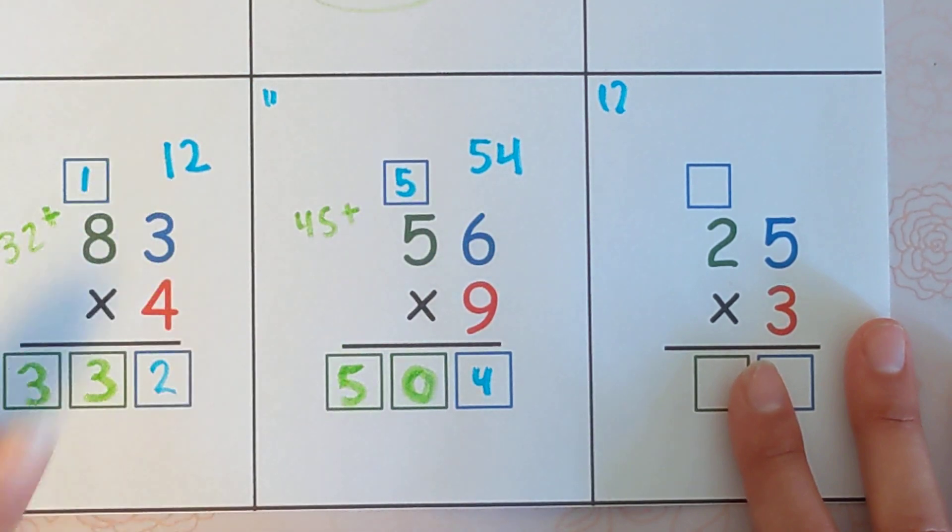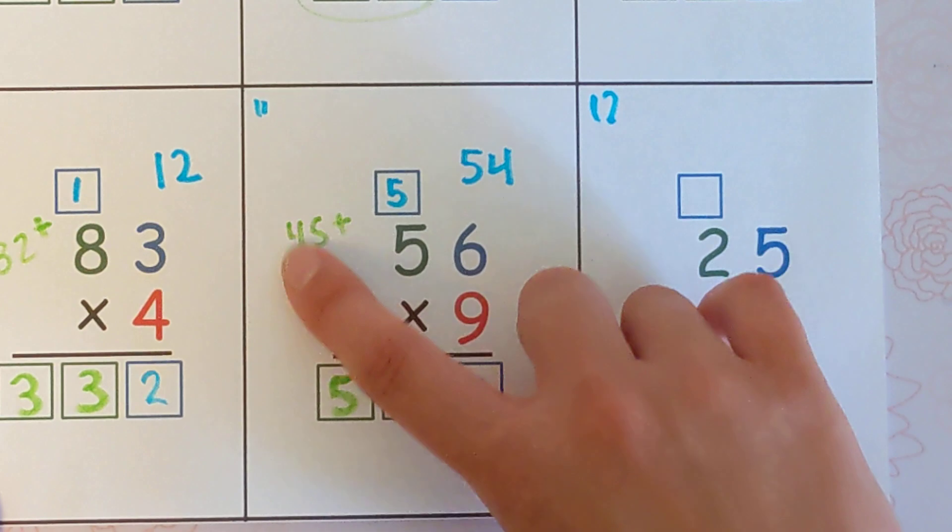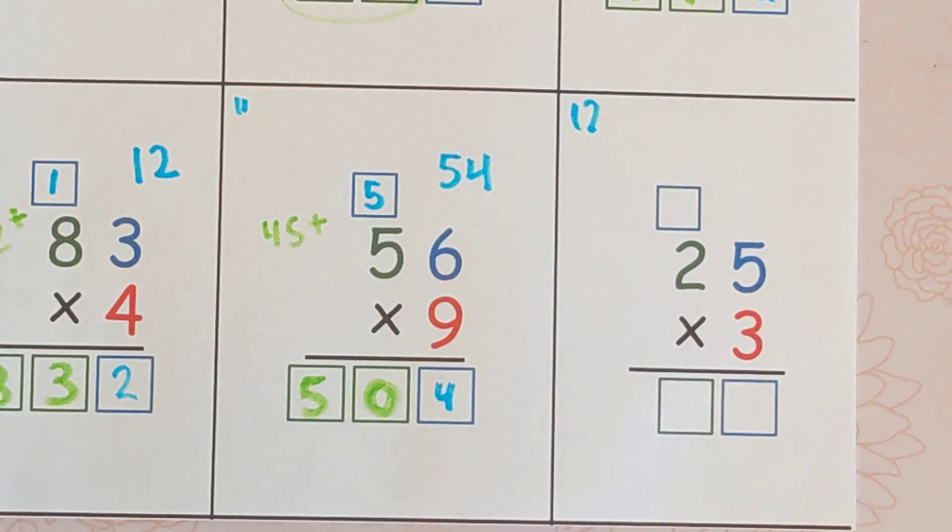So great job. Again, to recap, we did 9 times 6 is 54. 9 times 5 is 45. Plus 5 is 50.